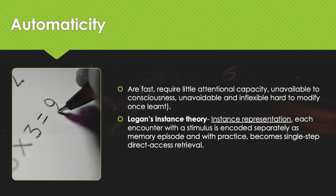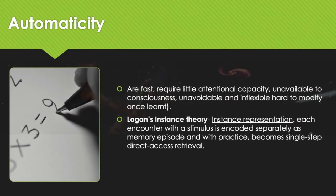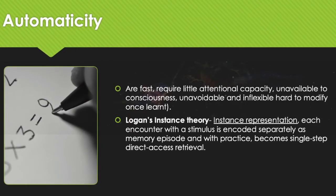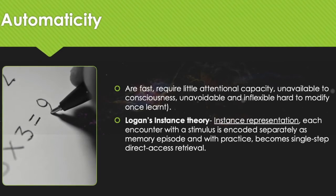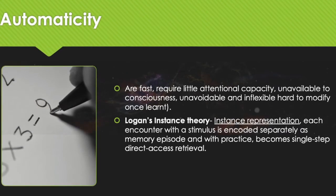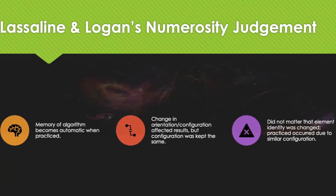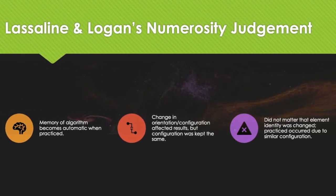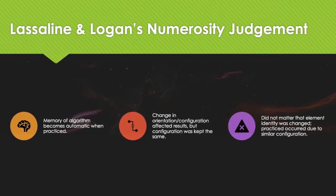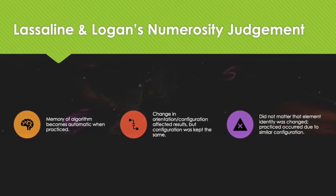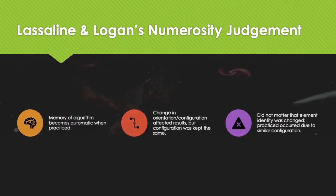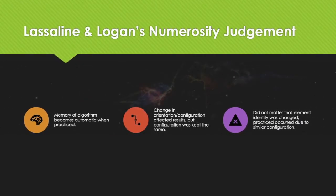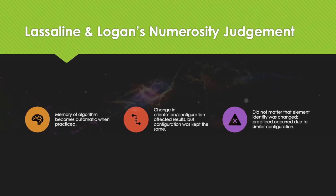Logan's instance theory holds that each encounter with a stimulus is encoded separately as a memory episode. With practice, the encoding of these representations became instantaneous — single-step direct access retrieval processes. Lassaline and Logan's numerosity judgment showed that memory of algorithms became automatic when practiced, and that a change in orientation or configuration affected results. Keeping the configuration the same allowed for practice, and it did not matter that the identity was changed with old numeric patterns — this produced automaticity.